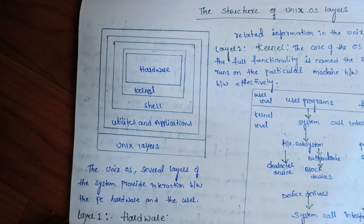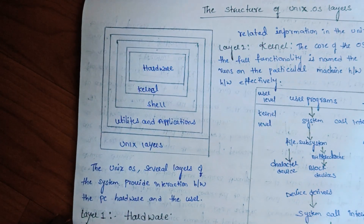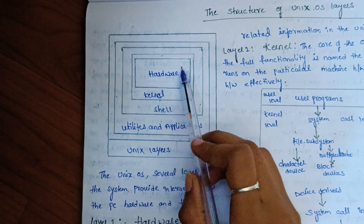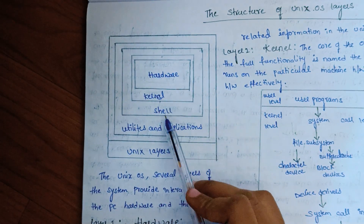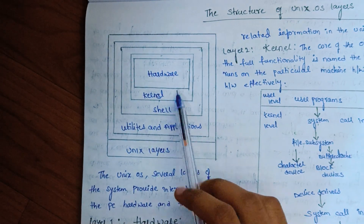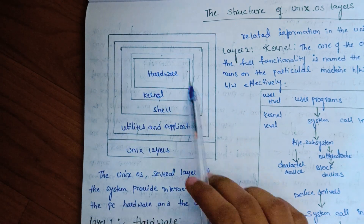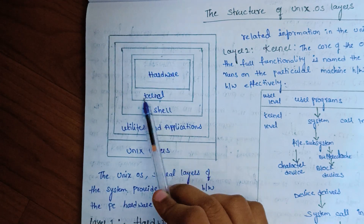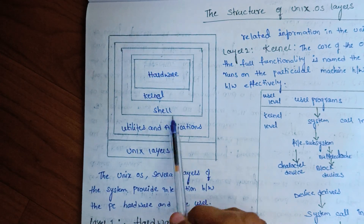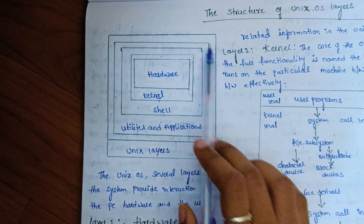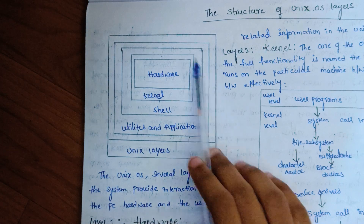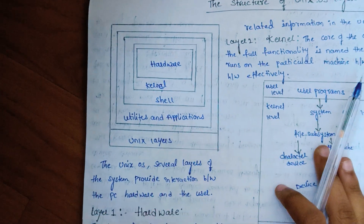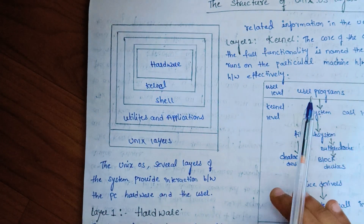We have 4 types of layers. The first layer is hardware, the second is kernel, the third is shell, and the fourth is utilities. These are the 4 layers of the Unix operating system — layer 1, layer 2, layer 3, and layer 4. This is the main structure of Unix.